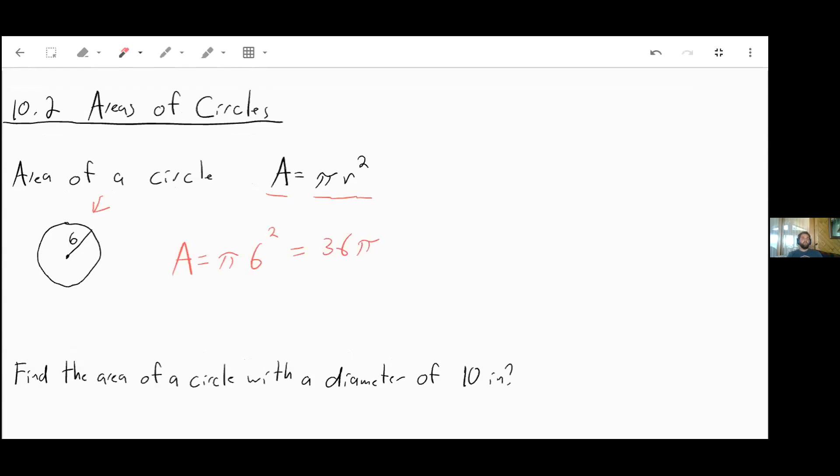If your homework ever asks you to leave this as an exact answer, your answer would be 36π. Unless it tells you to maybe use 3.14 for pi, or might tell you to use 22 sevenths for pi, because that fraction is actually pretty close. But if it ever doesn't specify, you can be done right here. You don't actually have to multiply by 3.14 or anything else, unless it tells you to.